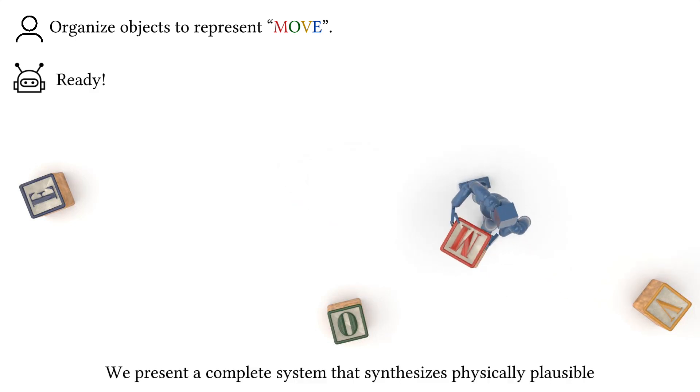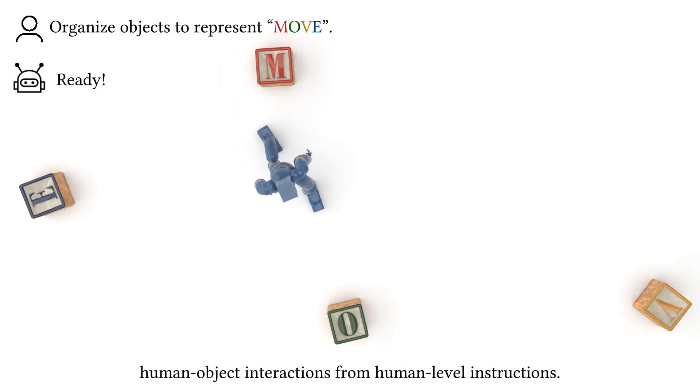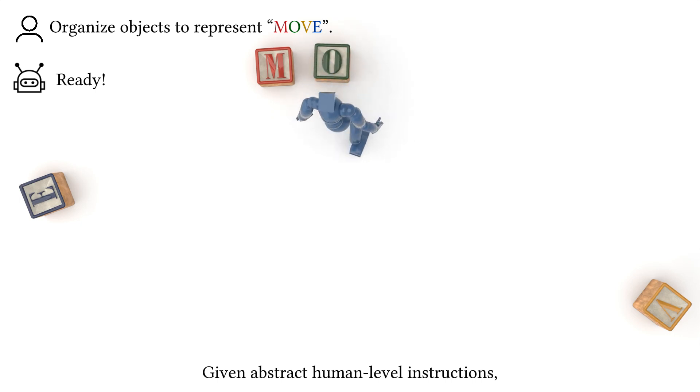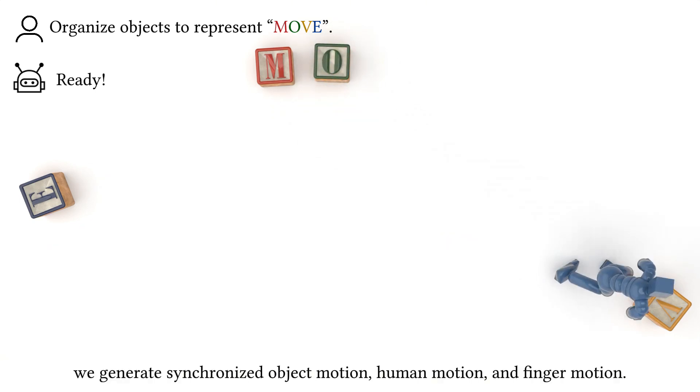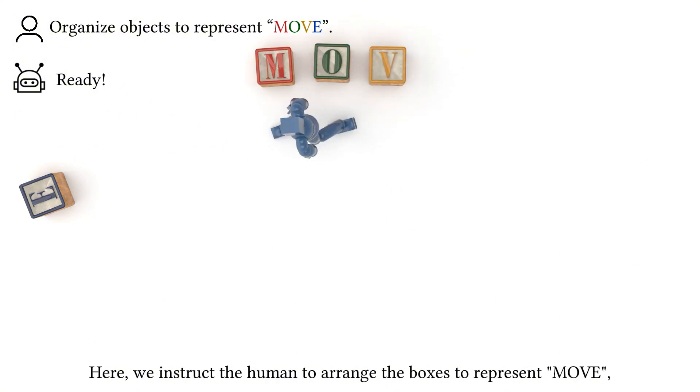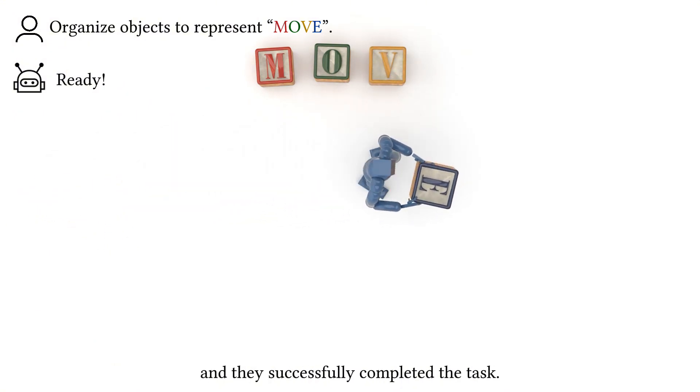We present a complete system that synthesizes physically plausible human-object interactions from human-level instructions. Given abstract human-level instructions, we generate synchronized object motion, human motion, and finger motion. Here, we instruct the human to arrange the boxes to represent 'move,' and they successfully completed the task.